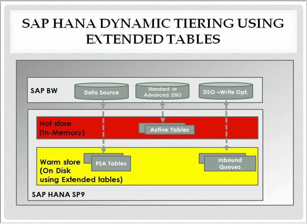The data written to an extended table is written directly to the disk-based data storage. This warm data is accessed using algorithms which are optimized for disk-based storage.